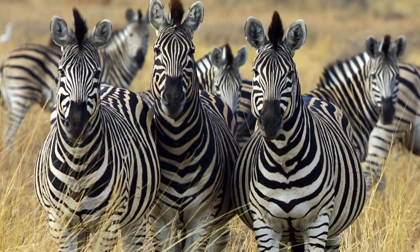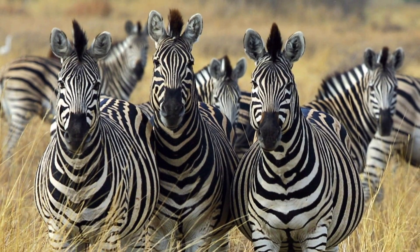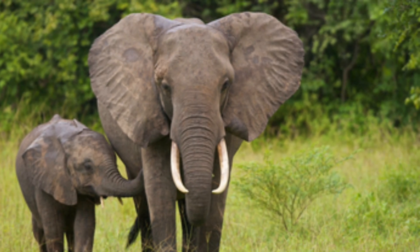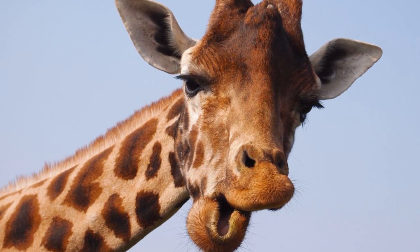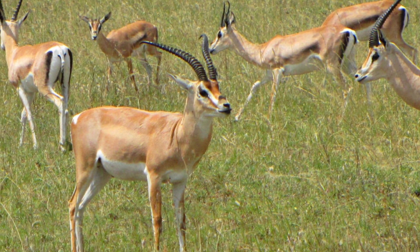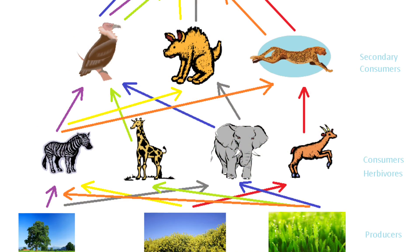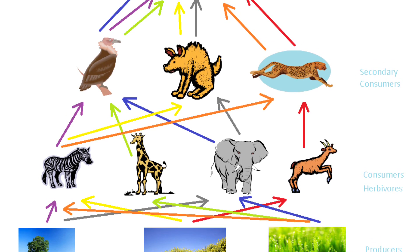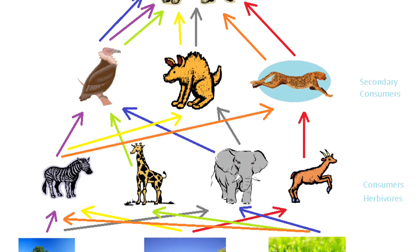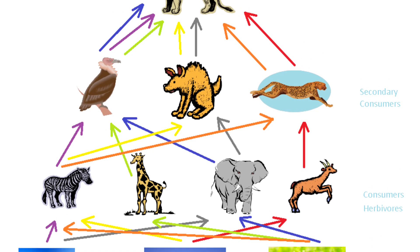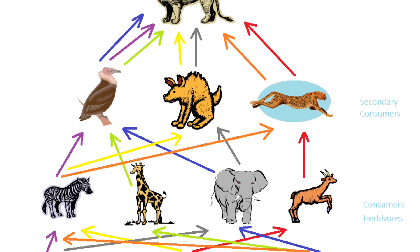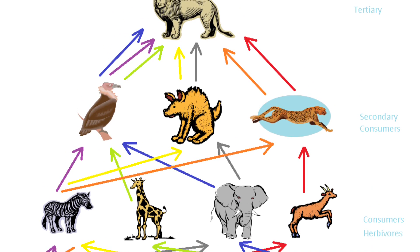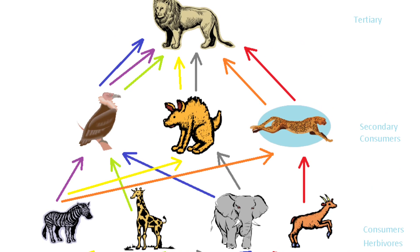The main consumers include herbivores such as zebras, elephants, giraffes, and gazelles. At the bottom of the food web there are producers, and at the top of the food web there is the lion. Common predator-prey relationships would include the cheetah and the gazelle, the lion and the coyote, and the elephant and elephant grass.